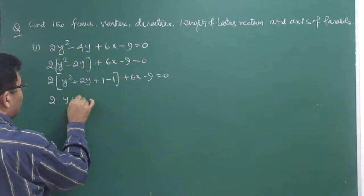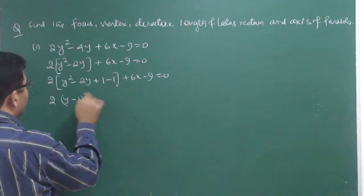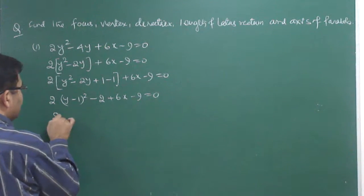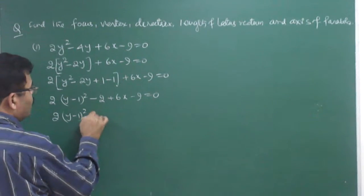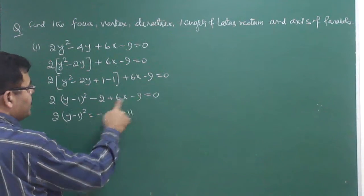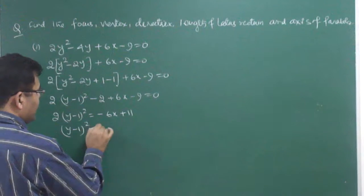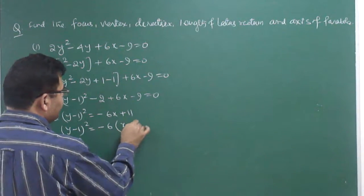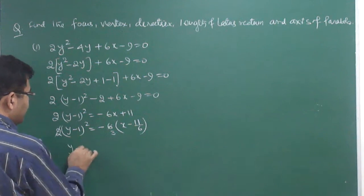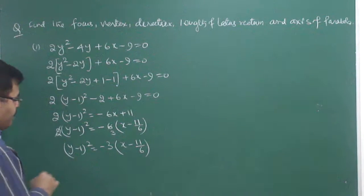This gives 2(y - 1)² + 2(-1) + 6x - 9 = 0, that is 2(y - 1)² - 2 + 6x - 9 = 0. So 2(y - 1)² = -6x + 11. Therefore (y - 1)² = -3(x - 11/6). This is the equation of the parabola.